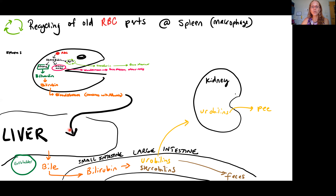At the liver, bilirubin is picked up and becomes a component of bile, which travels to the small intestine via the bile duct. In the large intestine, gut bacteria break bilirubin down into two molecules: urobilins and stercobilins. Urobilins re-enter the bloodstream, are processed by the kidneys, and leave in urine — contributing to urine's yellowish color. Stercobilins remain in the large intestine as part of fecal material, contributing to its brownish-orange color.